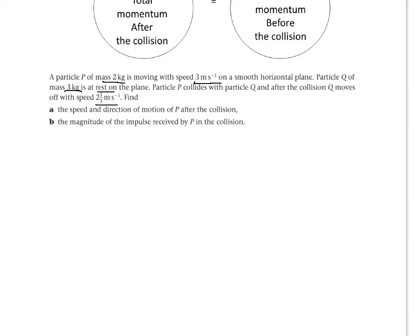Now, you can use that information to draw a diagram to represent this question. So here's my particle P and here's my particle Q. Let's just look at the information we know about particle P first. We know its mass is 2 kg and we know its initial speed is 3 m per second. We do not know its speed afterwards because that's what we're asked to find in part A. So, x ms to the minus 1.